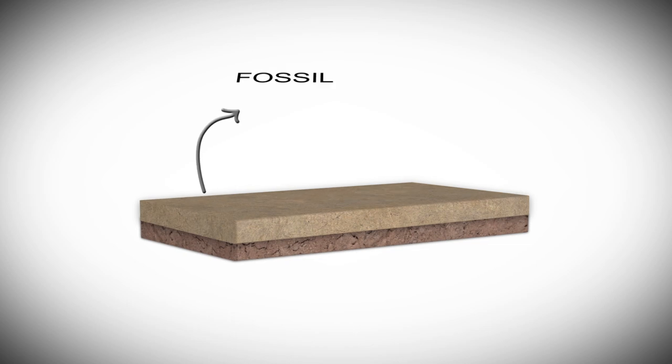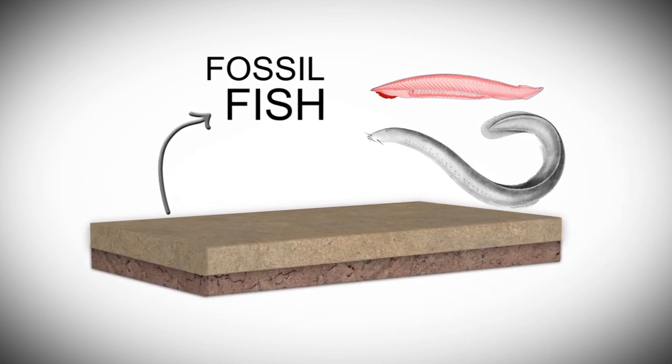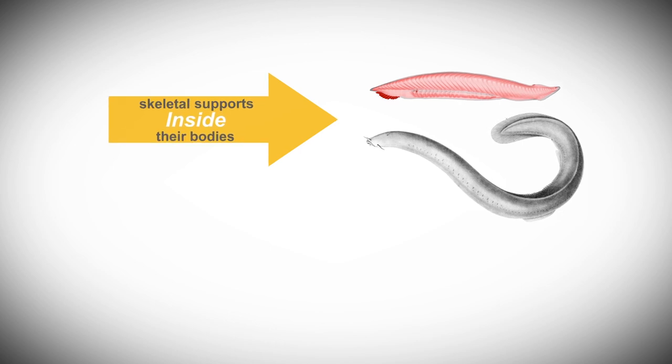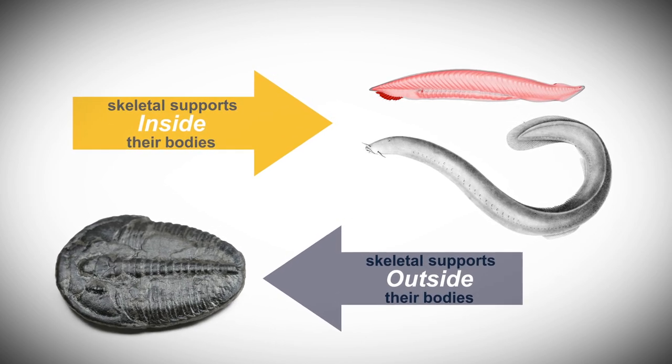Cambrian rocks also contain fossil fish that look like today's lancelets and hagfish. The fish had perfectly crafted skeletal supports inside their bodies, an opposite arrangement from Cambrian arthropods like trilobites.